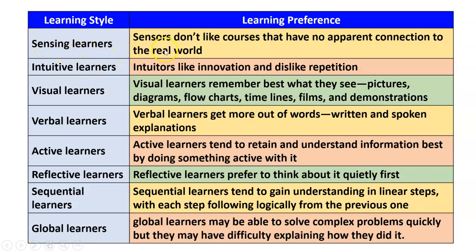The sensing type of learner does not like a course that has no apparent connection to the real world; they want subjects with real-time application. Intuitive learners like innovation and dislike repetition; they want innovative thinking and ideas inside the classroom. Visual learners remember best what they see in terms of pictures, diagrams, flowcharts, timelines, film and demonstration.